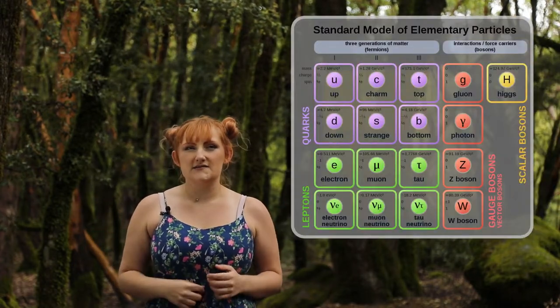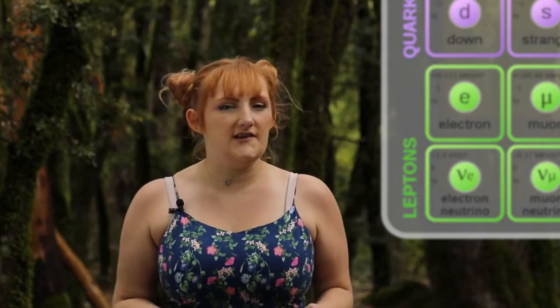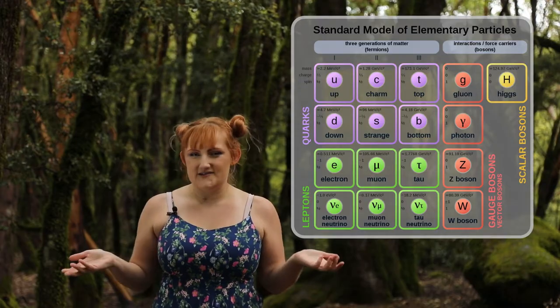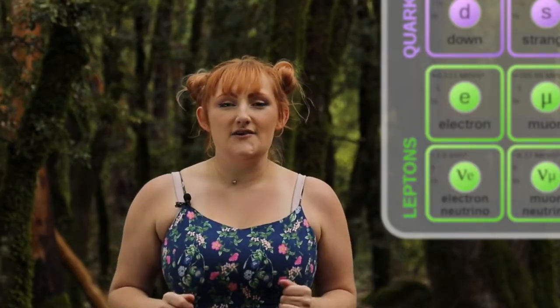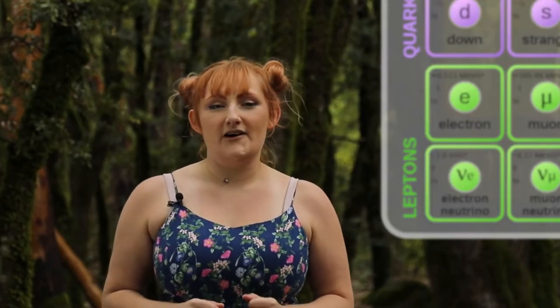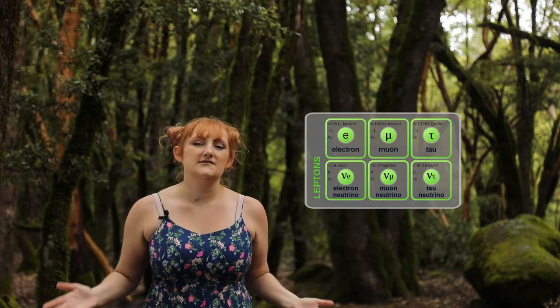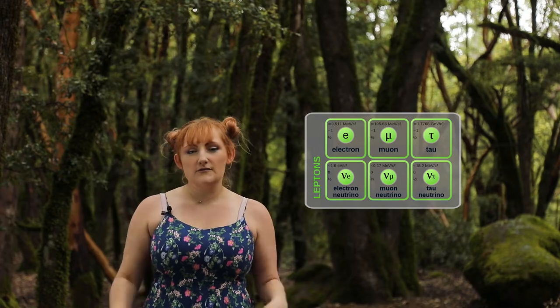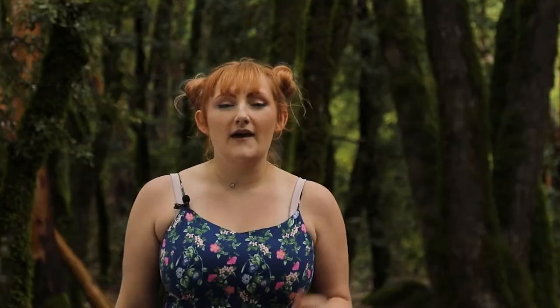Neutrinos are subatomic particles on the standard model of particle physics, which is kind of like a periodic table but for subatomic particles. The neutrinos are in the lepton class, of which there are six different particles — three of them are neutrinos, and they have three different flavors.